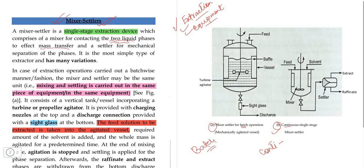To effect mass transfer — to extract the process of the extraction process. That is called the Settling. To add a new product and extract the work.